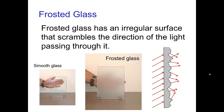An extreme example of this is frosted glass. With frosted glass, usually we have one smooth surface and then the other surface has all sorts of irregularities. So even though the glass itself is still transparent, when the light exits the rough side it reaches surfaces at all different angles and so it is deflected in all different directions, which basically distorts our ability to see through the glass.